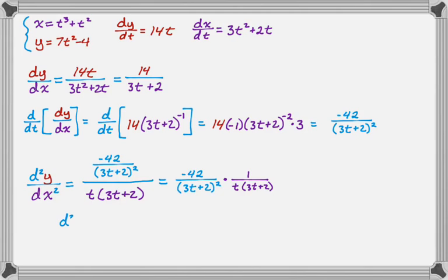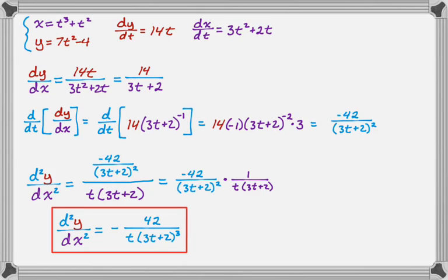So finally, my answer overall is going to be the second derivative with respect to x is negative 42 over t times 3t plus 2 cubed.